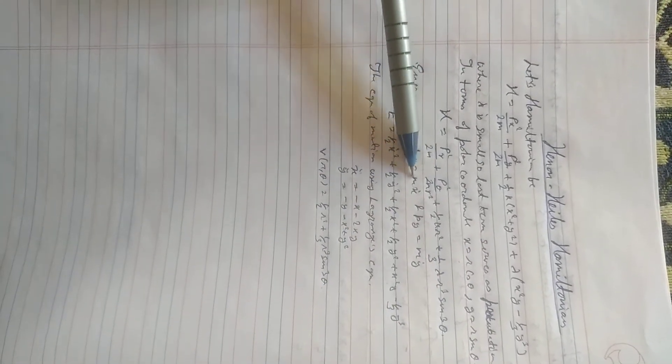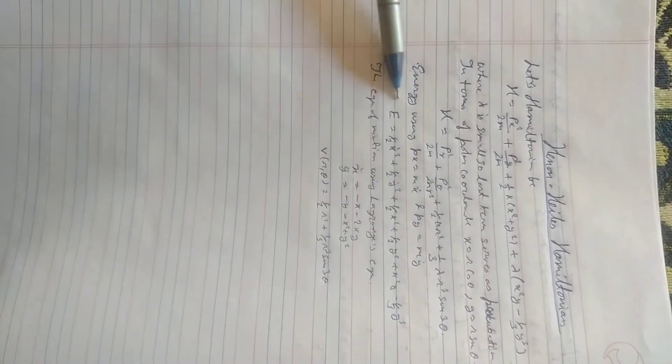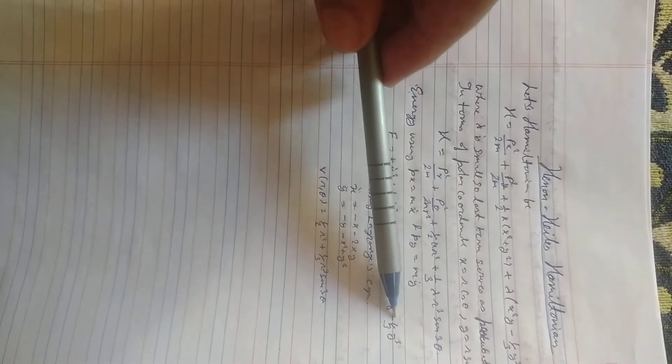Energy using Px equals mx dot and Py equals my dot, E equals half x dot square plus half y dot square plus half x square plus half y square plus x square y minus 1 by 3y cube.